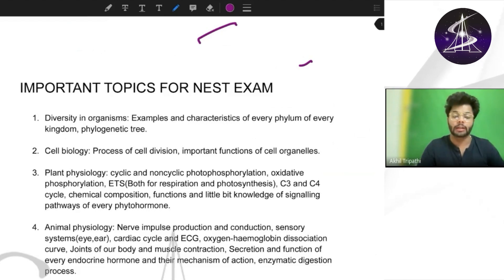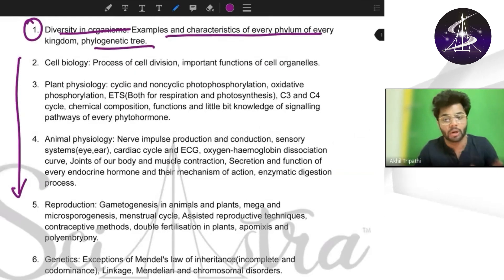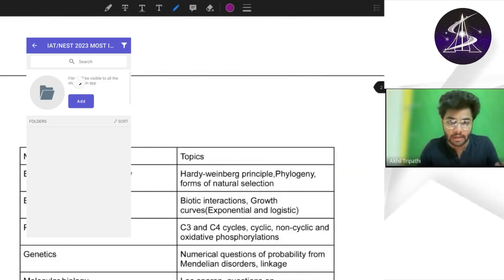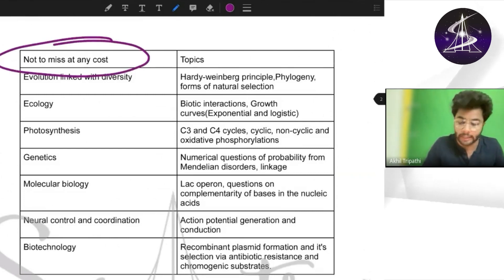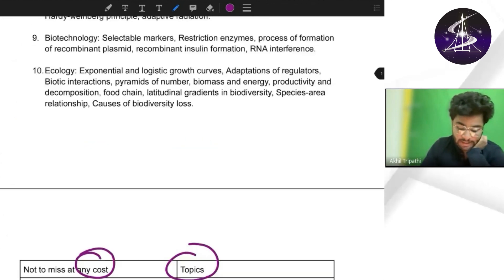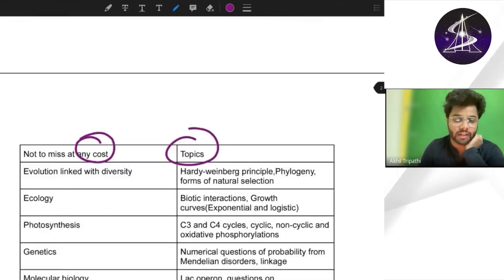For example, diversity in organisms. I will not describe all of this thing here because this whole PDF we are going to give you. You can get this whole PDF for free in Sayestra app, just go to the free study material. What I will tell you is the summary or the table that you see here - I will tell you what are the chapters you should not miss and the topics at any cost. The detailed analysis you will get in this PDF.